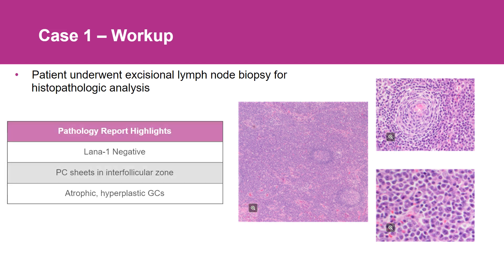Upon excision of the lymph node, it became clear this patient had plasmacytosis — sheets of plasma cells between germinal centers — and had atrophic germinal centers along with expanded mantle zones. These are the features that you often see with Castleman disease. Further staining for LAN-01, a marker of HHV8 infection, was performed and turned out to be negative.